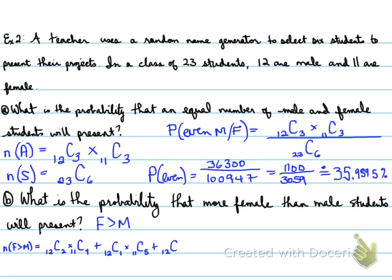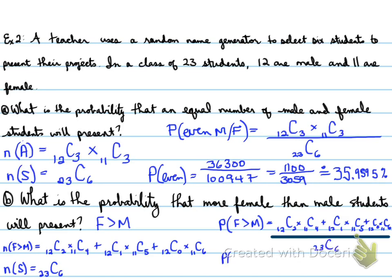So from 12 boys, we choose nothing times, 11 choose all 6 that we're looking for. We plug that in our calculator, and we get an answer of probability of female greater than male is going to be 27.5253%.